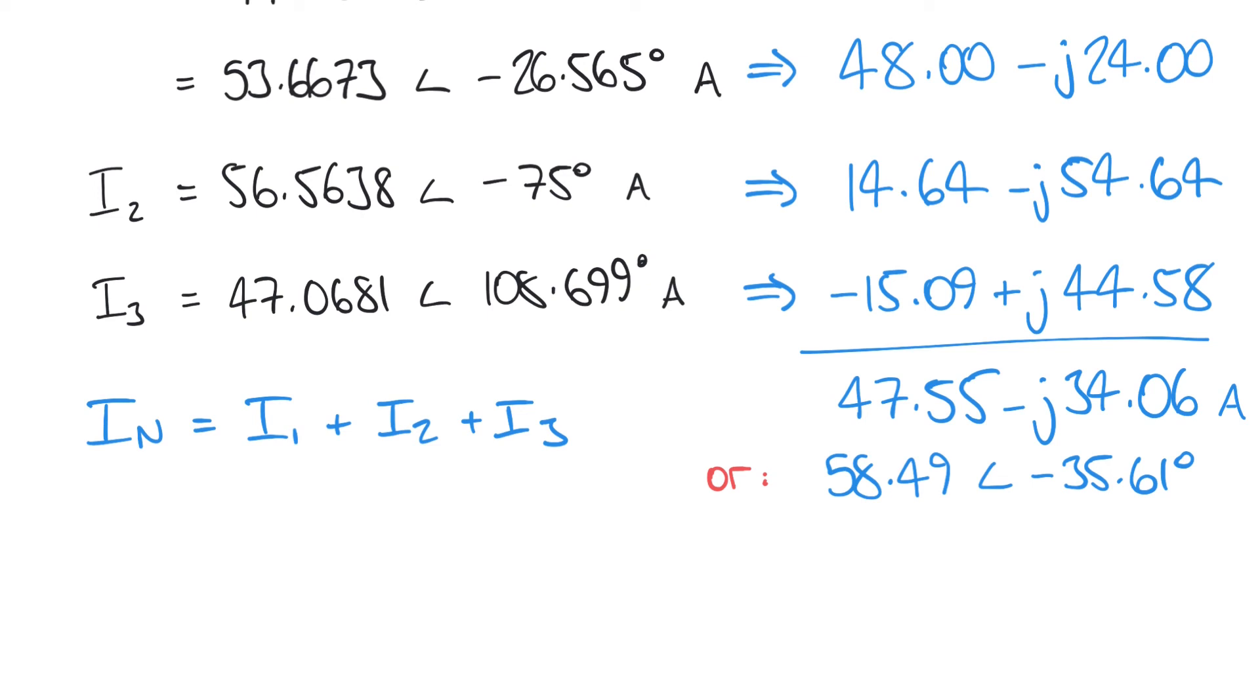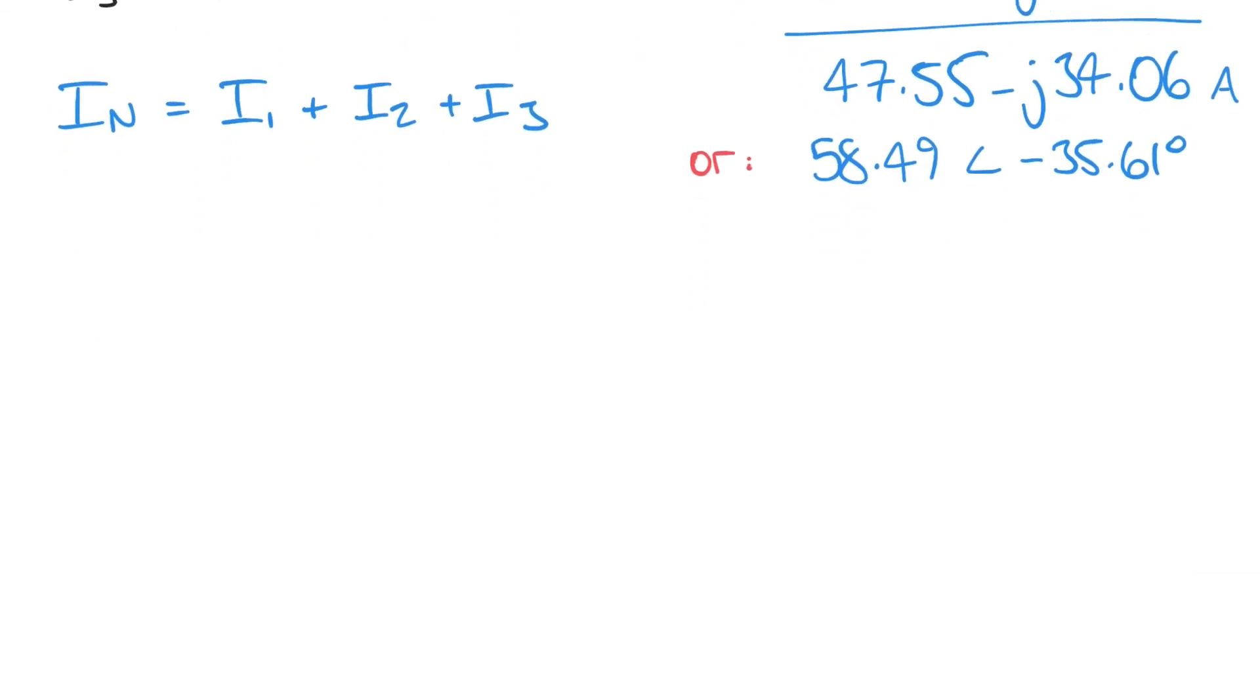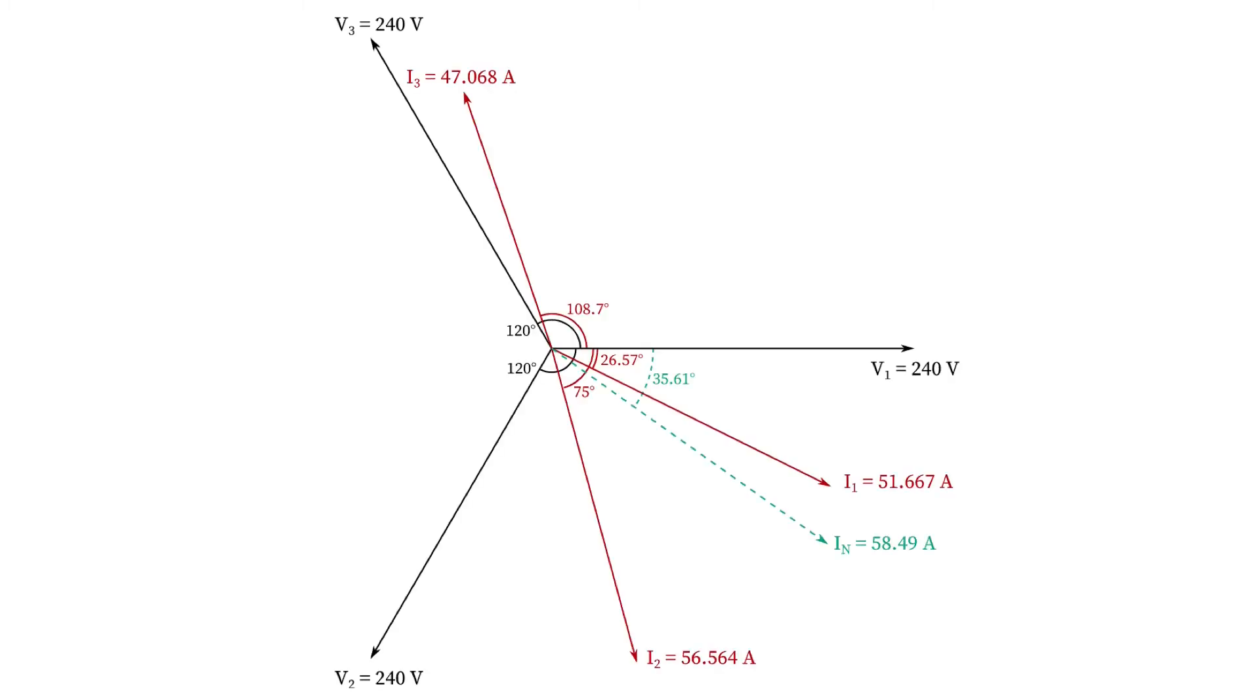The last thing we'll do before we finish up this video is show everything that we've calculated so far on a phasor diagram. Here it is. What we'll hopefully notice straight away is that it's nowhere near as symmetrical with equal phase separation as our previous example which was a balanced network. Just a quick reminder that we always measure our angles from the horizontal.